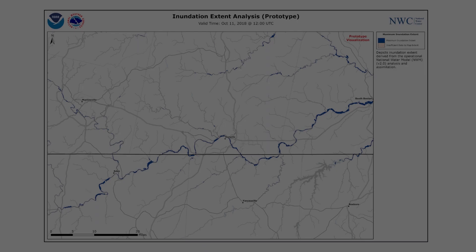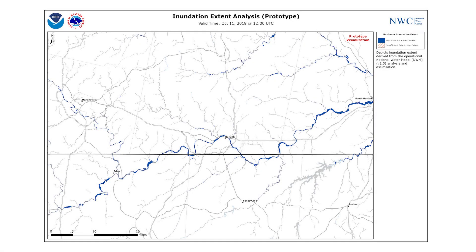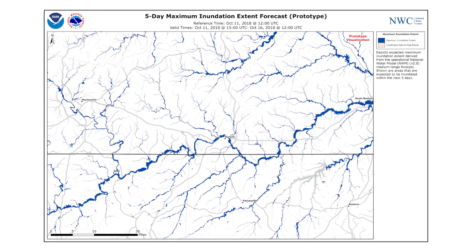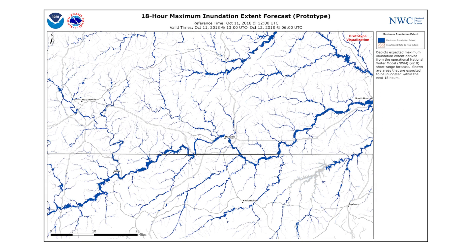During some flood events, the extent and location of inundation may be the most important variable for decision support services. This service provides visualizations for the current analysis, medium-range forecasts covering 3, 5, and 10 day periods, and an 18-hour short-range forecast.